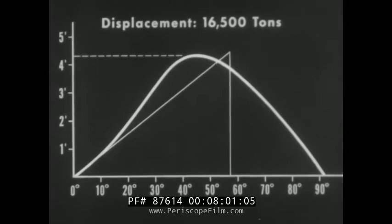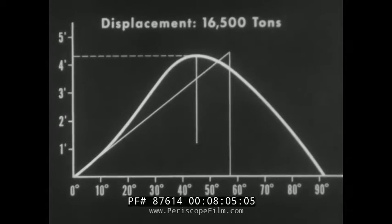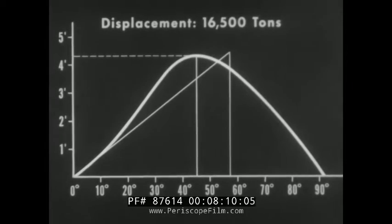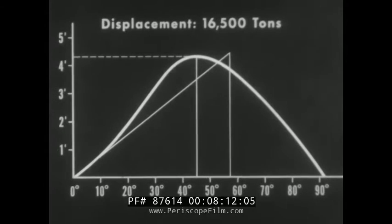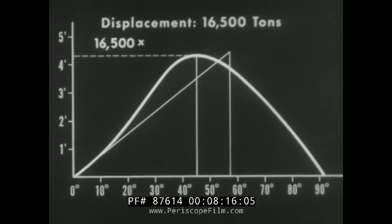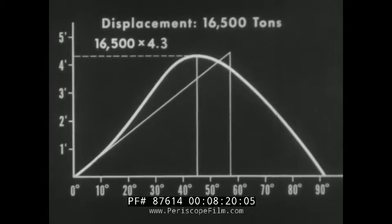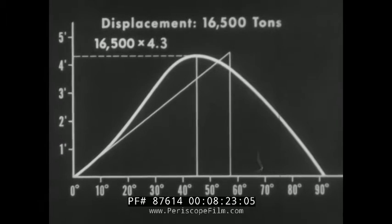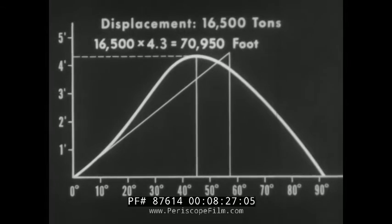The maximum righting arm for this condition of loading is produced at an angle of 45 degrees. Multiplying the ship's displacement, 16,500 tons, by the righting arm of four and three tenths feet at this angle of inclination, we learn that the maximum righting moment is almost 71,000 foot-tons.